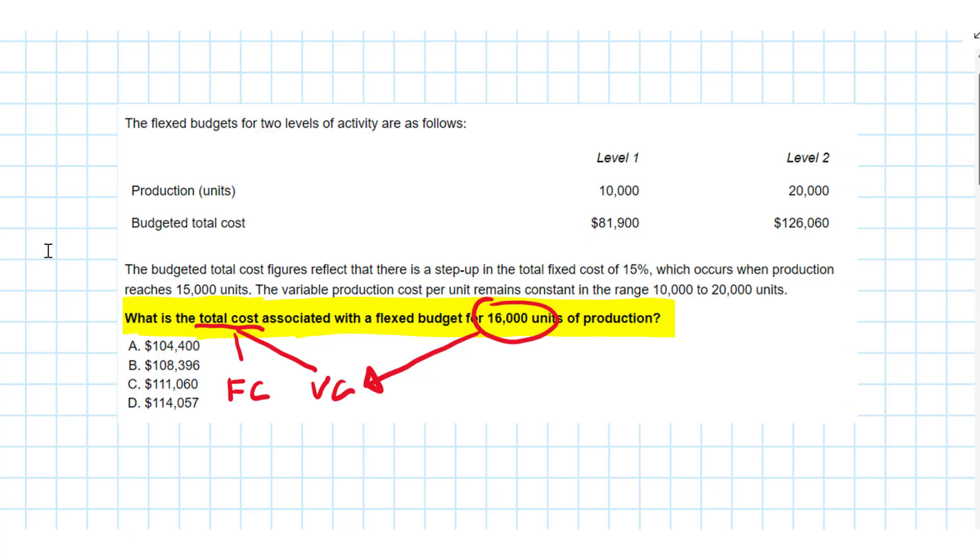However, we didn't read the full story. It might be more complicated. We've got two levels of activity: at 10,000 units we have a total cost of 81,900, and when our units are 20,000 we have a higher total cost of $126,060.